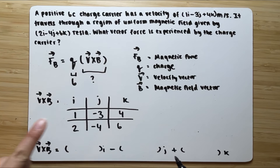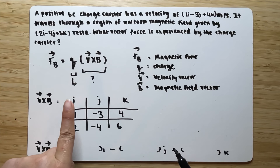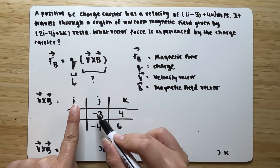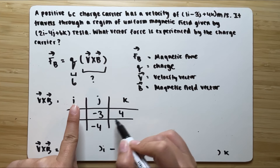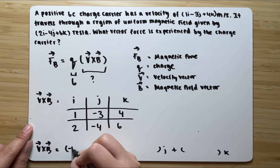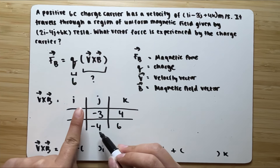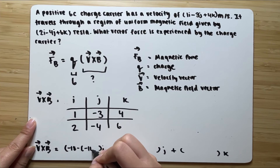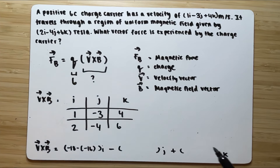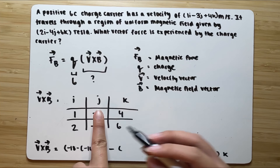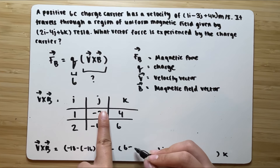To find our i component, we cover the i section and multiply the remaining two pairs together: negative 3 times 6 is negative 18, minus 4 times negative 4 is negative 16. That gives us our i. To find our j component, cover the j and multiply: 6 times 1 is 6, minus 4 times 2 is 8. That is our j.